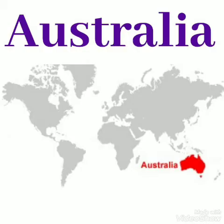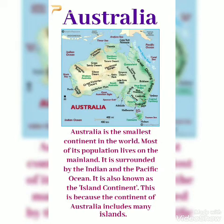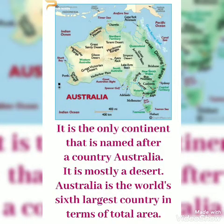Australia is the smallest continent in the world. Most of its population lives on the mainland. It is surrounded by the Indian and the Pacific Ocean. It is also known as the island continent, because the continent of Australia includes many islands, most of which are separate countries. It is the only continent named after a country, Australia. It is mostly a desert, and Australia is the world's 6th largest country in terms of total area.